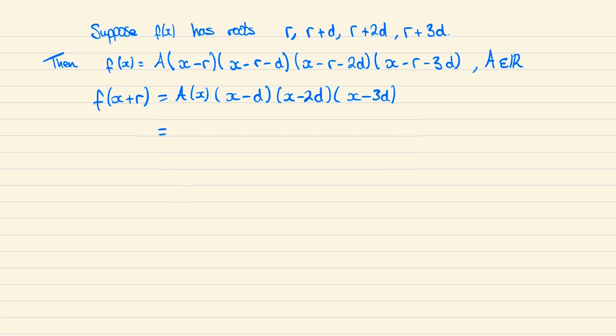Then if we expand these four terms we can write this as A times x to the 4 minus 6d x cubed plus 11d squared x squared minus 6d cubed x.